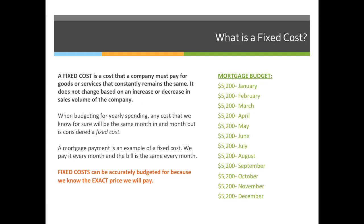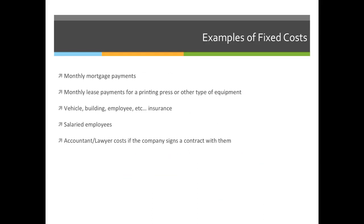If you ask me how much we're going to spend in July 2016 for our mortgage, I will say $5,200. If you ask me how much we're going to pay for our mortgage in January 2018, I will tell you $5,200. Some examples of fixed rate items include the monthly mortgage payment on your equipment, your building — anything you have to pay every single month.